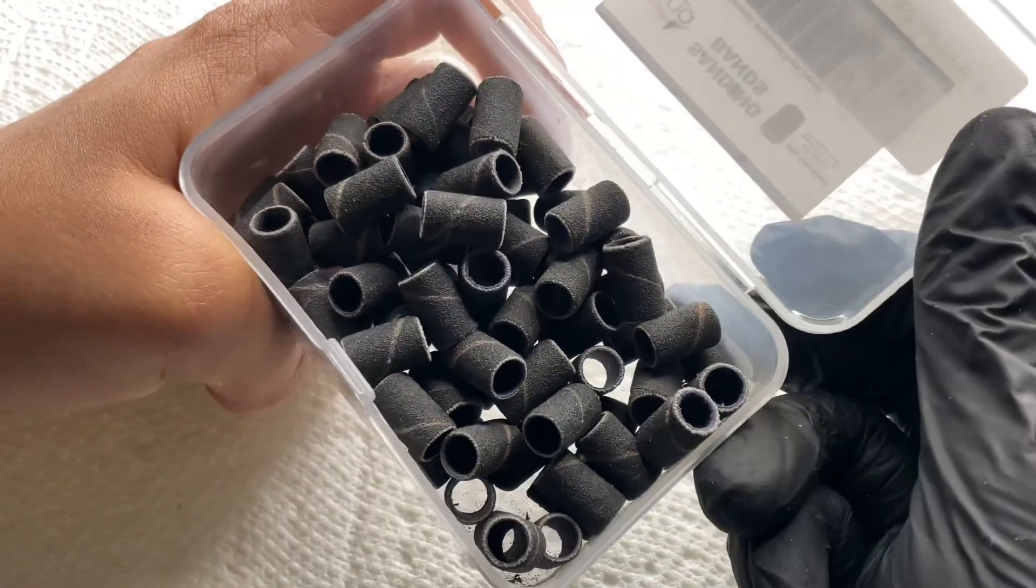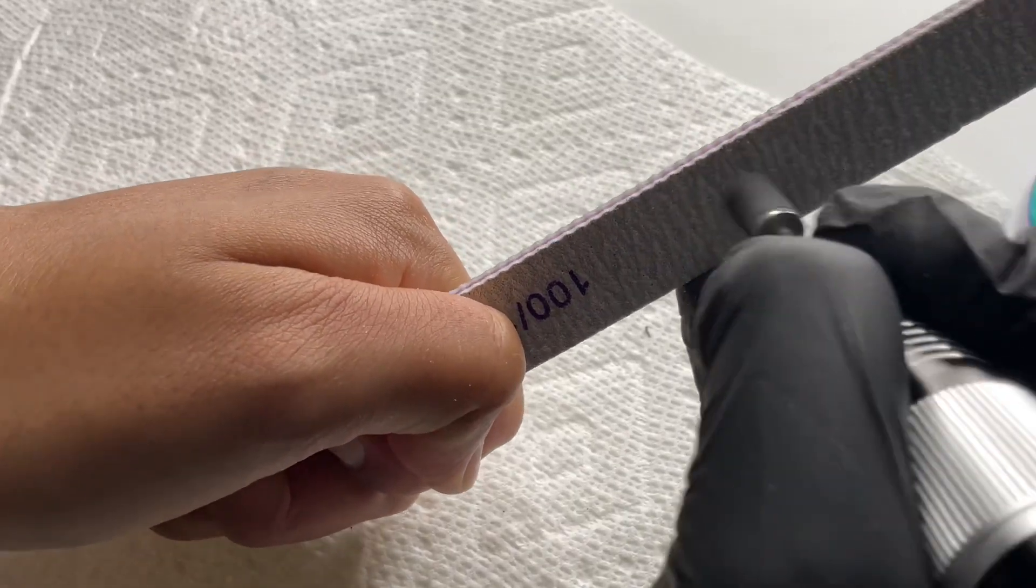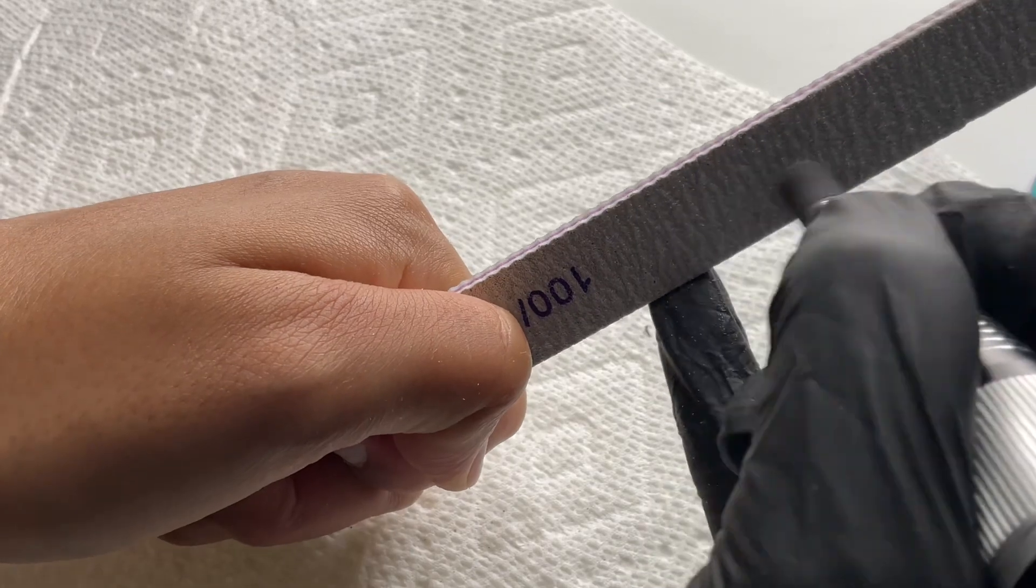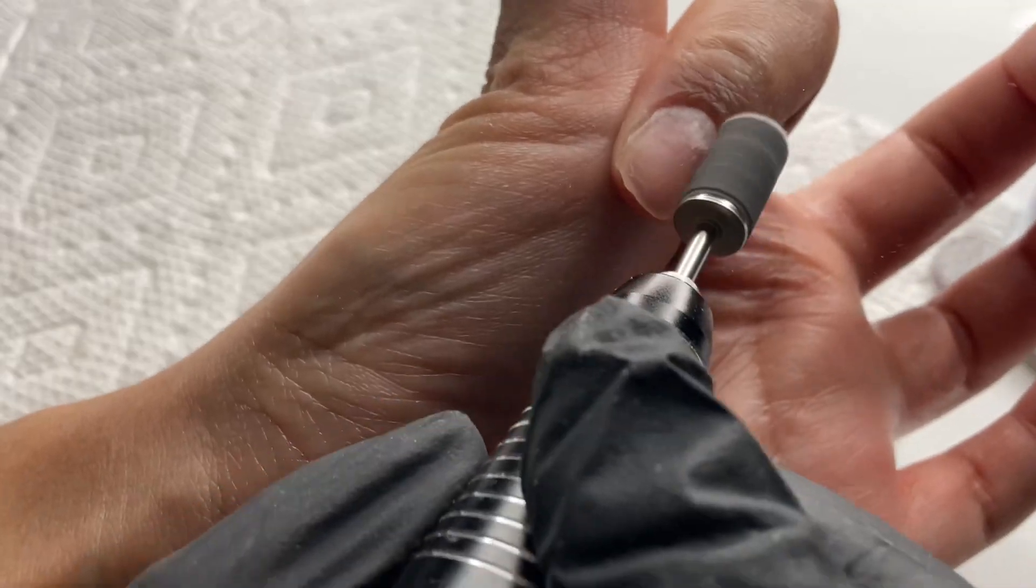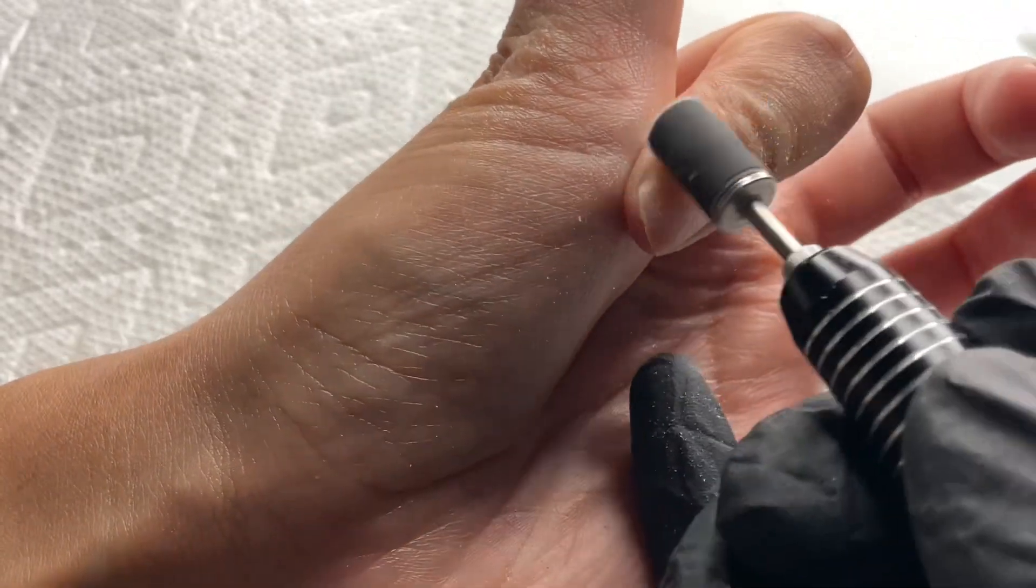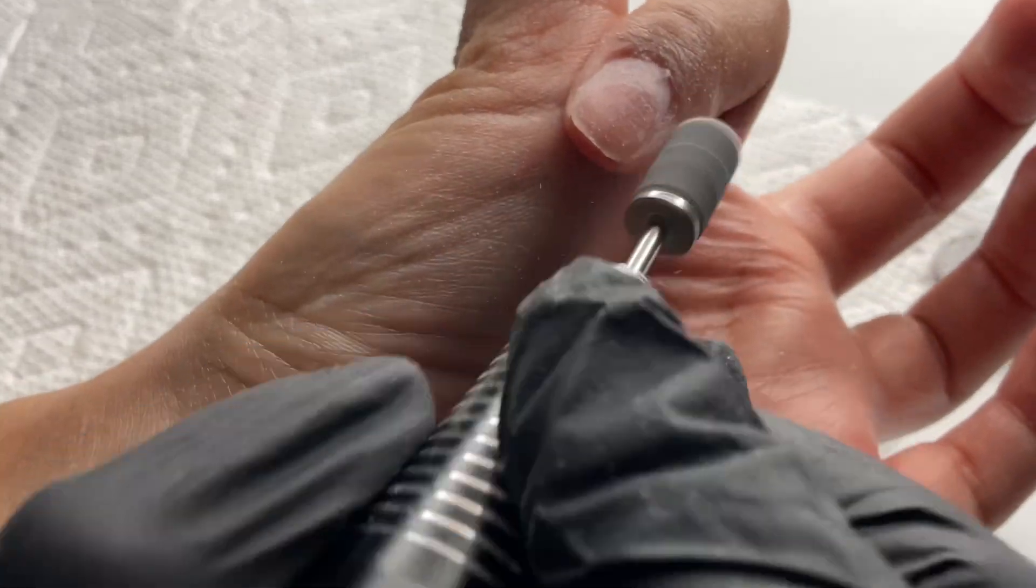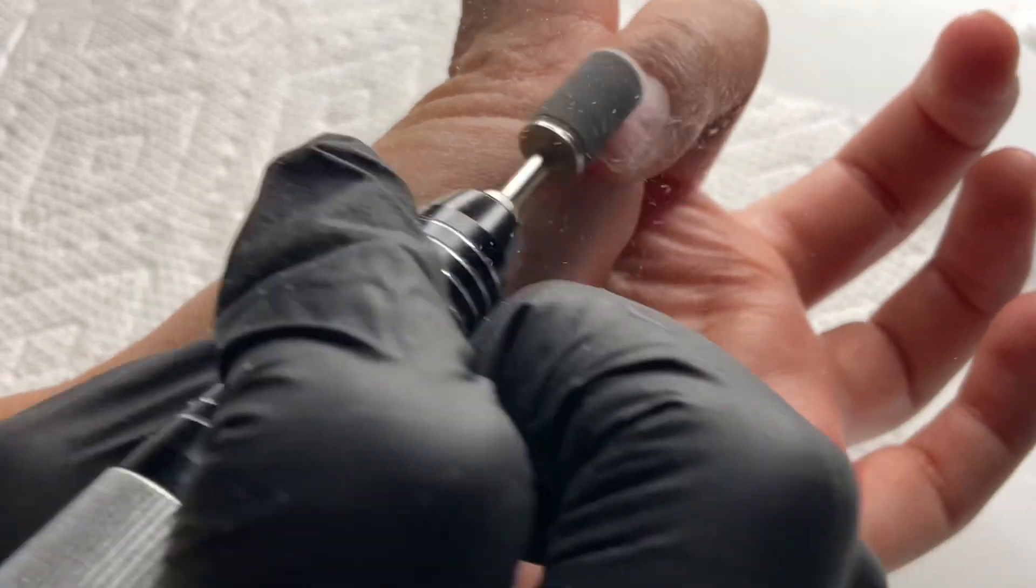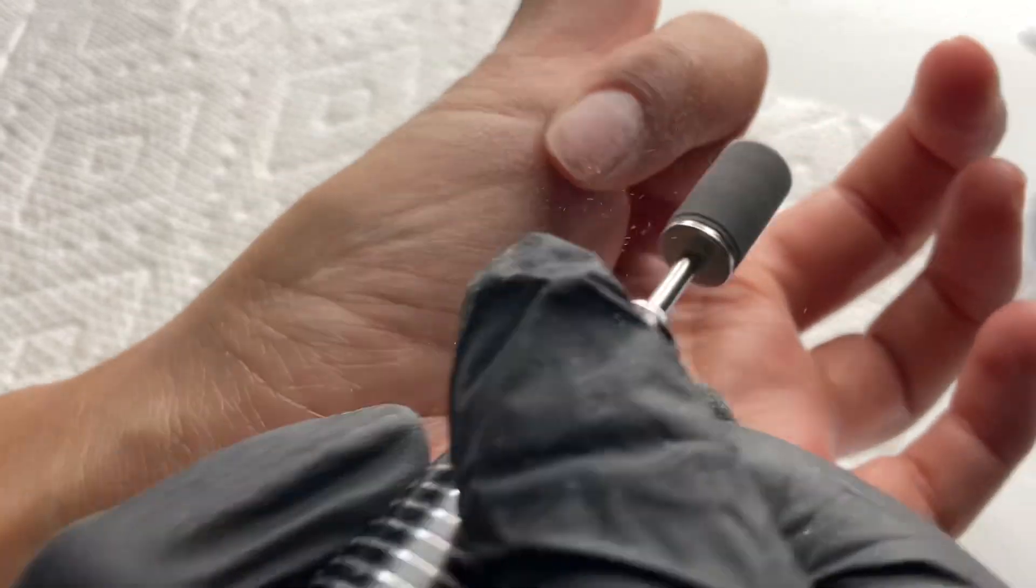Then taking my Pana sanding band, this is a 240 grit, seasoning it over a hand file so we don't cut ourselves. Then taking that at a very low speed, these clips are a little bit sped up but I'm going at about 3 RPMs, and just very gently taking off the shine and cleaning up that cuticle area a little bit more.